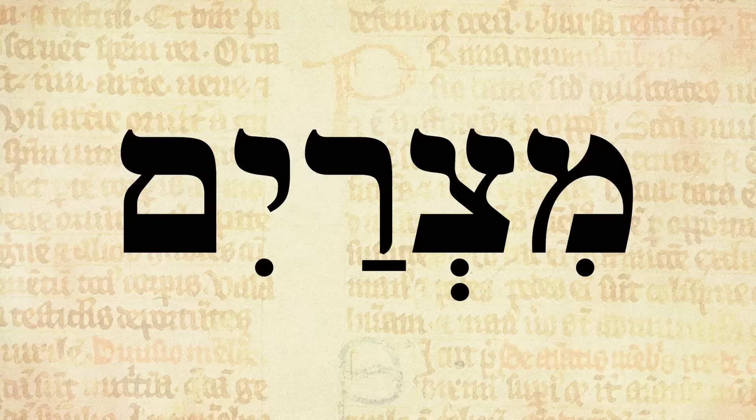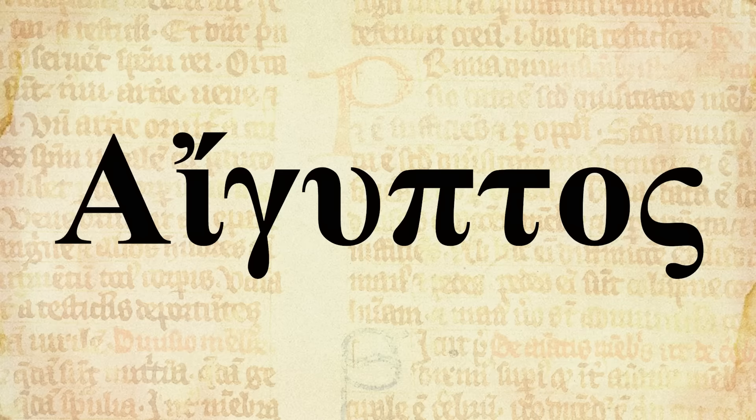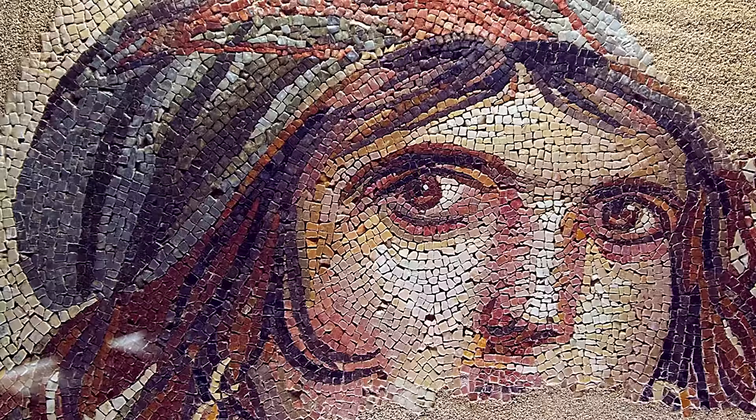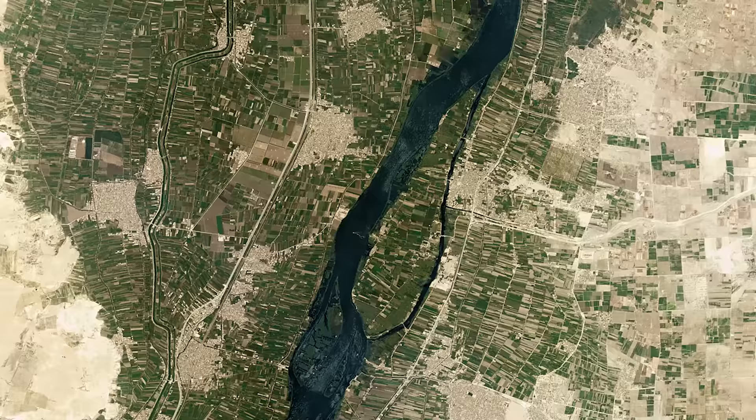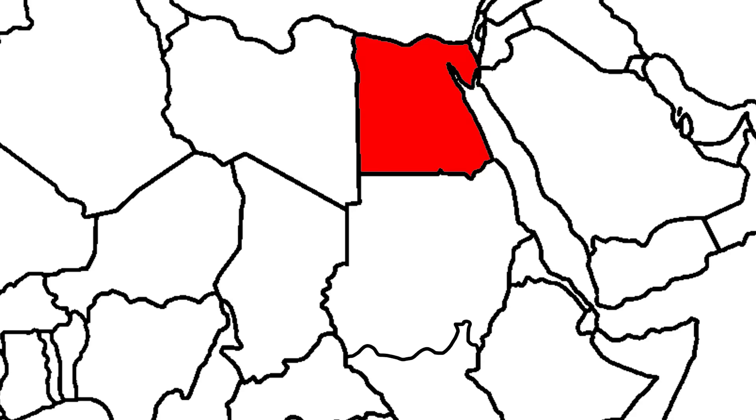A little language tidbit: Egypt has a lot of names. The biblical word for Egypt is Mitzrayim, and is still used today in Semitic languages like Hebrew and Aramaic. The name we use for Egypt is from the Greek Aegyptos, which is the origin of the word Gypsy — a derogatory term used against the Romani people of Indian descent. The ancient Egyptians referred to their country as Kemet, meaning 'Black Land,' a reference to the dark and fertile Nile soil.